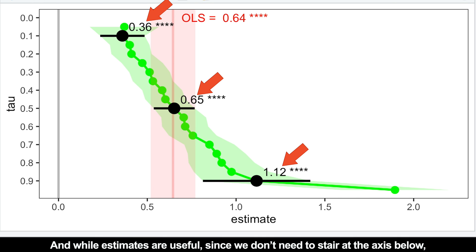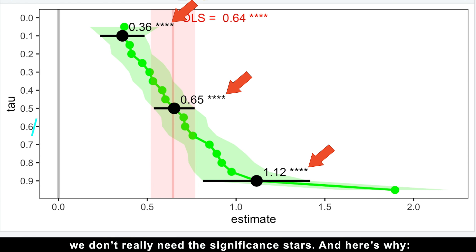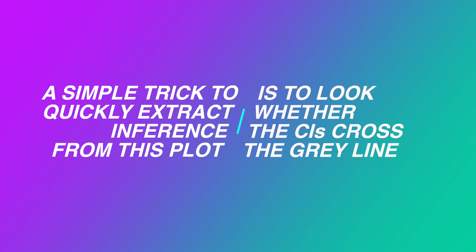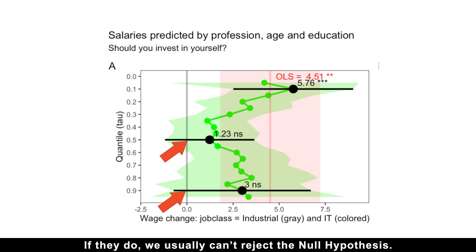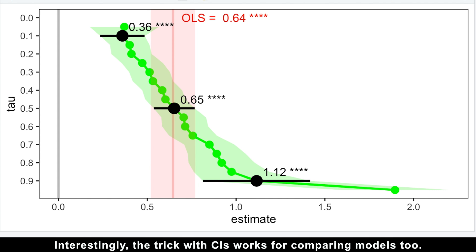And while estimates are useful, since we don't need to stare at the axis below, we don't really need the significant stars. And here is why. A simple trick to quickly extract inference from this plot is to look whether the confidence intervals cross the gray line. If they do, we usually can't reject the null hypothesis. If they don't, we can.